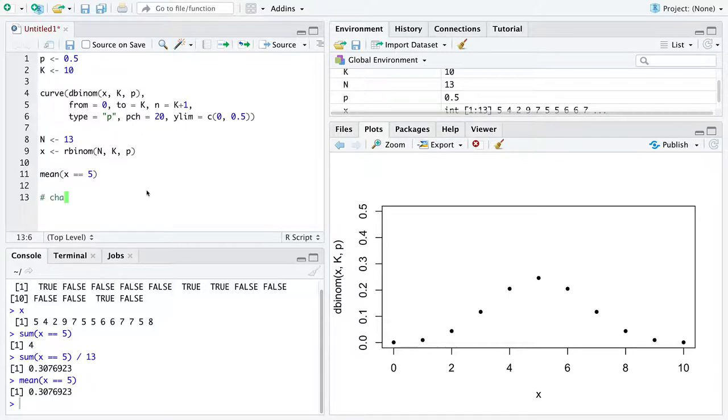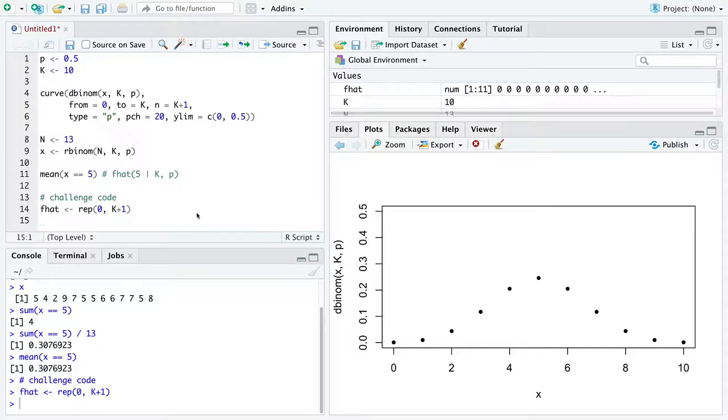Okay, so let's try a challenge piece of code here. You ready for this? If this is estimating, let's call it f hat at five, given k and p, what I'd like to do is be able to come up with a vector of values f hat for all values that x could take on. So I'm going to start by creating f hat, which is going to repeat 0 k plus 1 times.